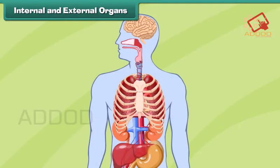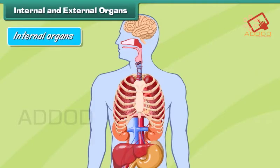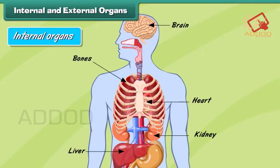The organs that are located inside the human body and not visible to the human eye from outside are called internal organs. For example, heart, liver, kidneys, brain, bones, etc. Let us understand how some internal organs function.